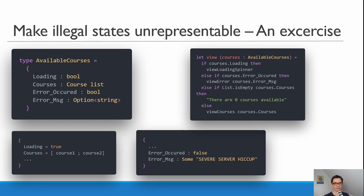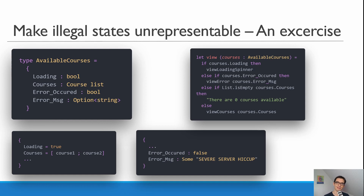Another problematic state is that error_occurred is false but we have an error message — maybe it's a message from a previous error we haven't cleaned up, or we didn't set the correct boolean. With this type, this state is entirely possible. We would need to write unit tests or clean this up later, and we all know that with an MVP, technical debt put on the wall never actually gets cleaned up because the next feature always comes first.